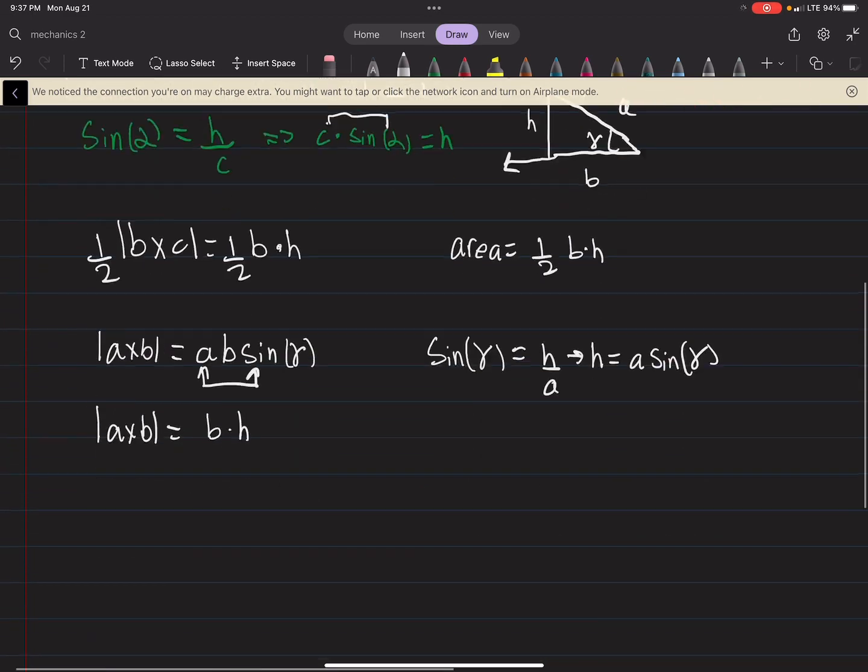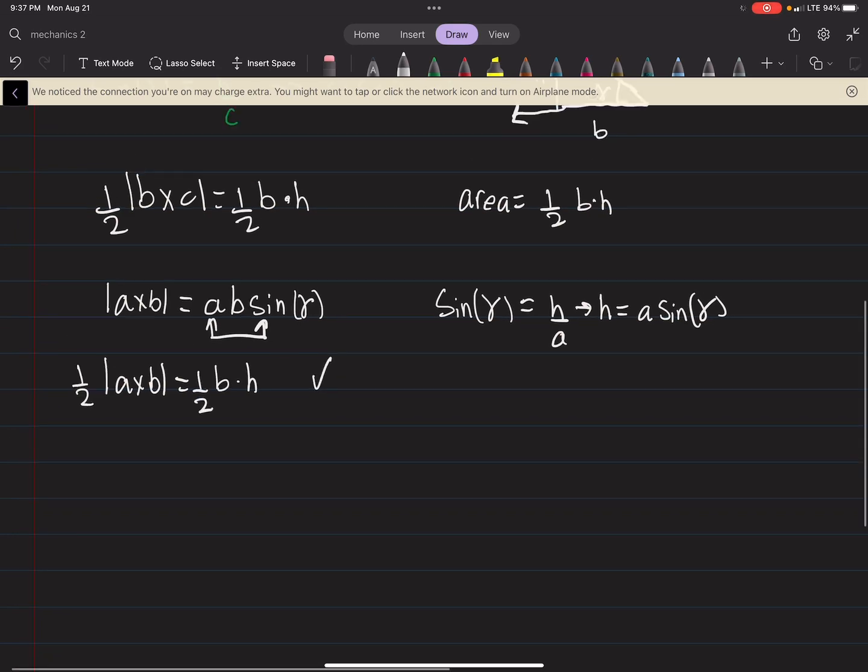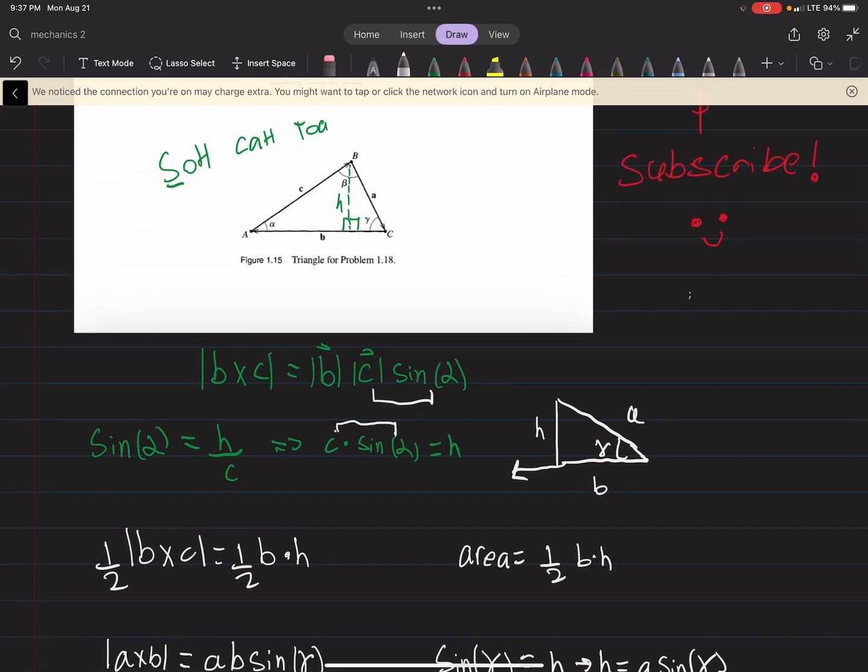Likewise, for B cross C, B was the base. And again, if you divide it by half, you get the equation that we would want. So that is that part.